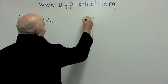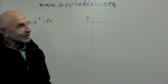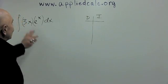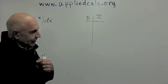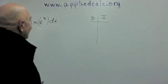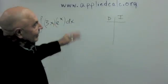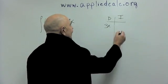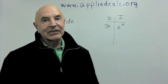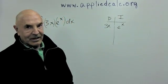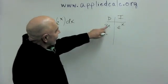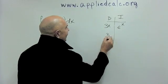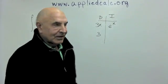We're going to make two columns. I'm going to call this D, which stands for derivative, and I, which stands for integral. In the D column, we're going to put one of these functions. Generally speaking, if you have a polynomial like 3x, that goes in the D column. And in the I column, the other factor, e to the x.